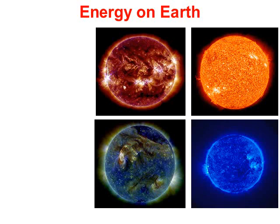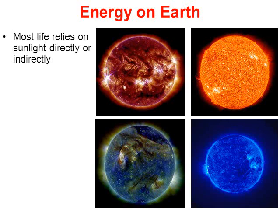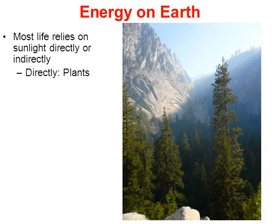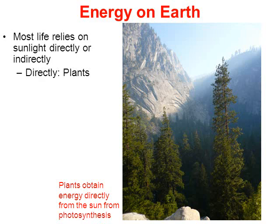To wrap up this video: energy on Earth really starts with the sun. Most life on Earth relies directly or indirectly on the sun. I say 'most' because there is a peculiar group of creatures in the deepest parts of the ocean — we'll get to those in a moment. Organisms that directly rely on the sun are autotrophs, such as plants. Plants obtain energy directly from the sun by doing photosynthesis, as do some cyanobacteria, photosynthetic bacteria, and algae.